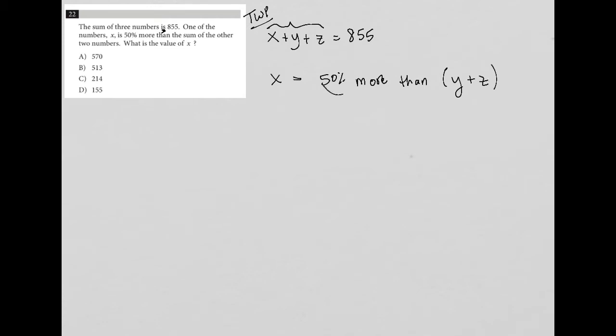How do I translate that into something more mathematical? If x equaled y plus z, I would just say x equals y plus z. For it to be 50% more, if they were equal they'd be 100% of each other. x is 50% more than y plus z, which makes it 150% of the value.